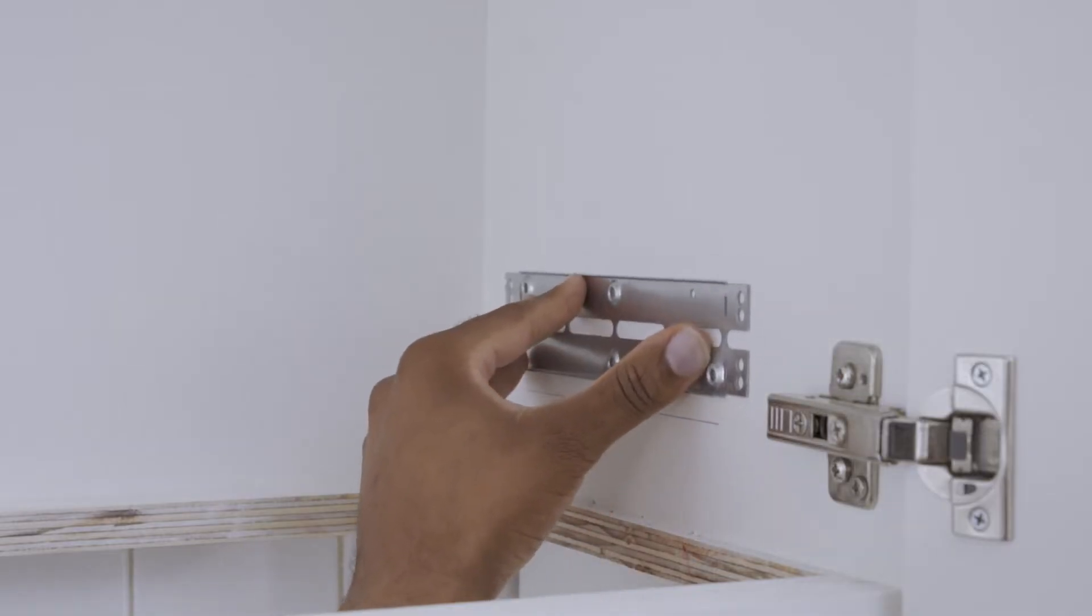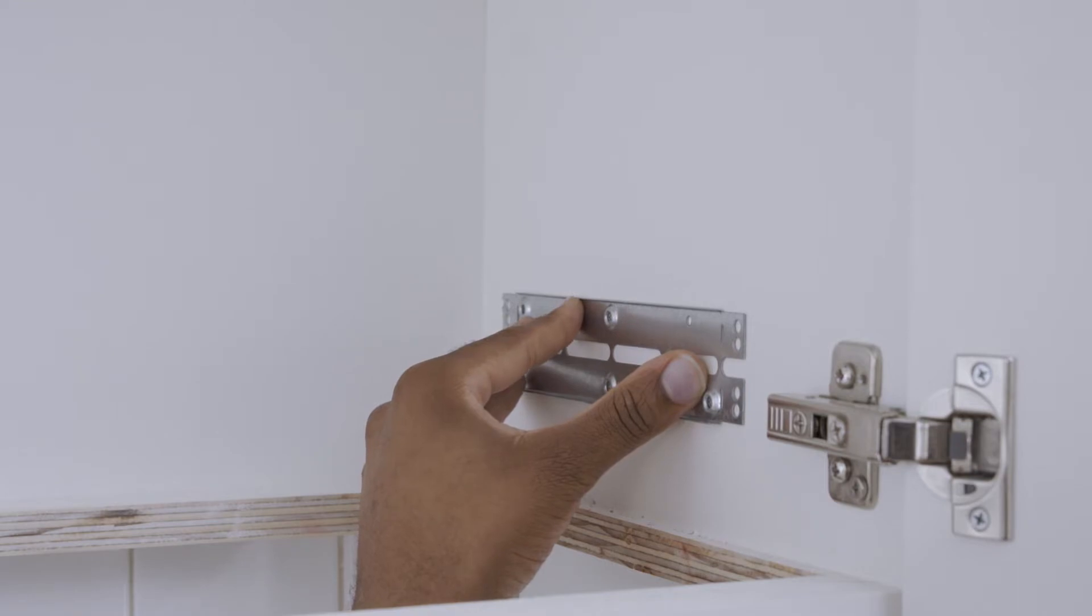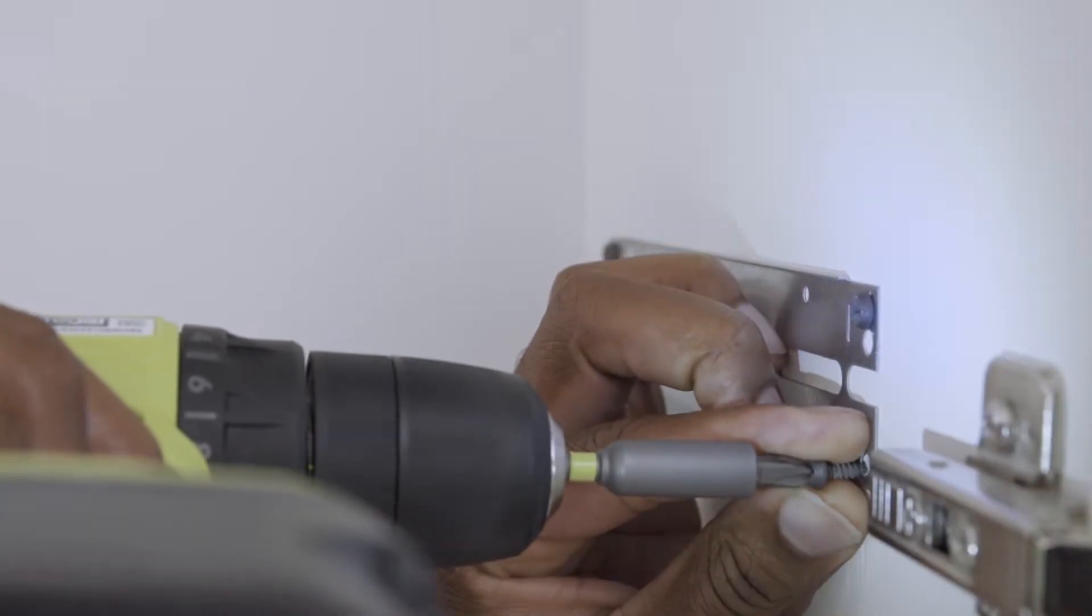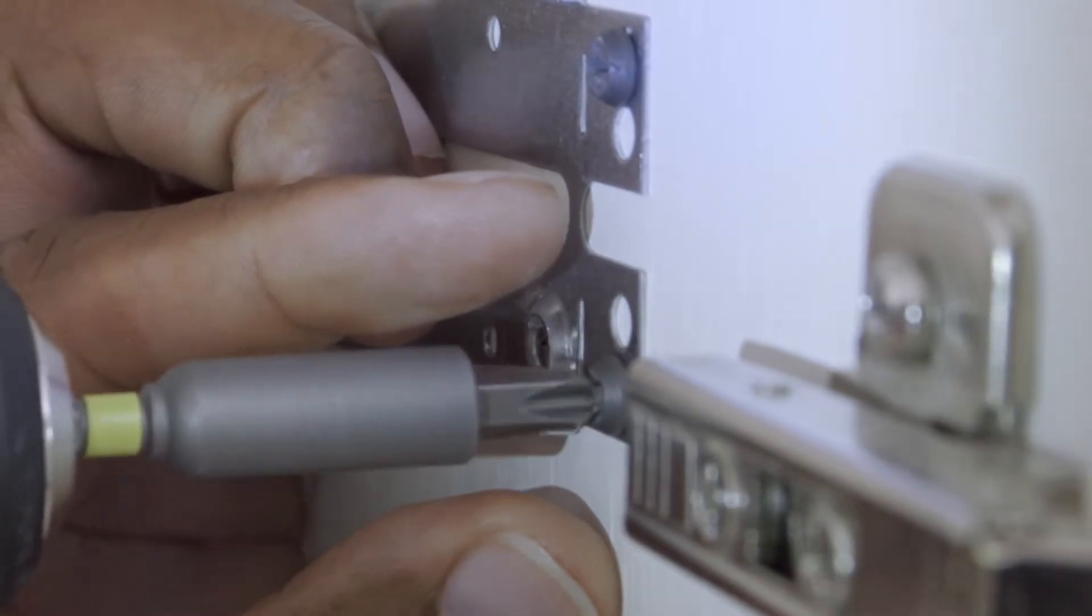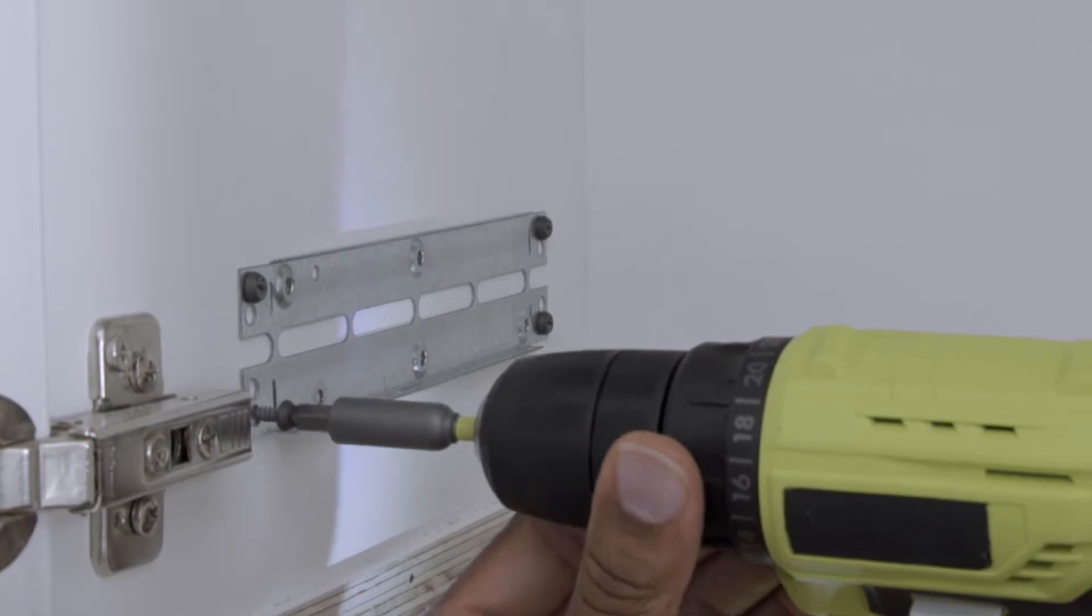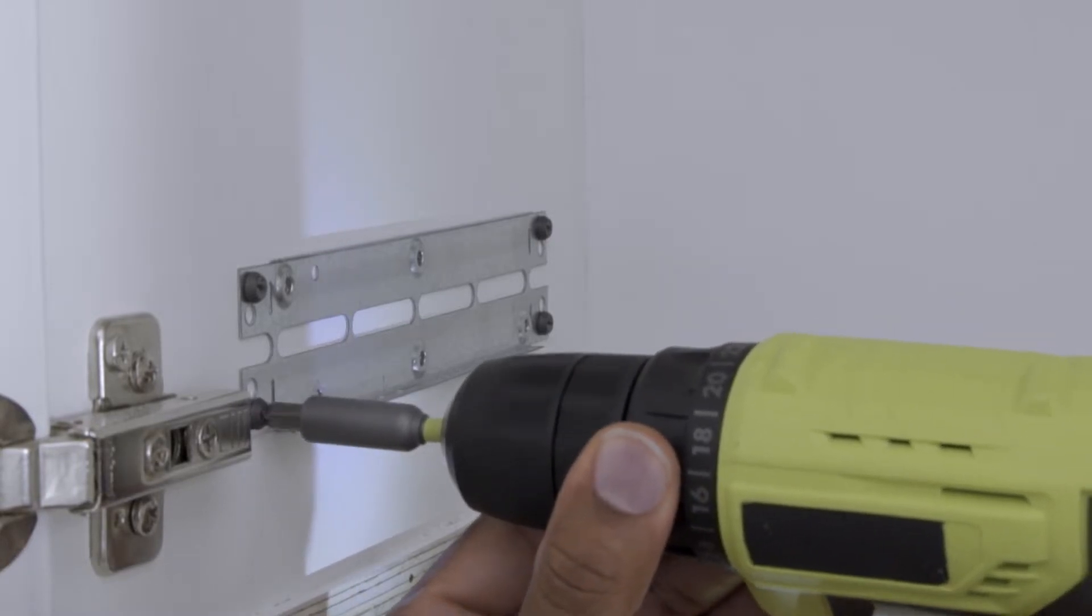Lift the bracket so the bottom edge of the bracket is flush with the marked line. Now, screw the bracket into place. Repeat the same steps for the opposite side of the cabinet.